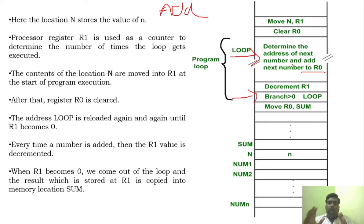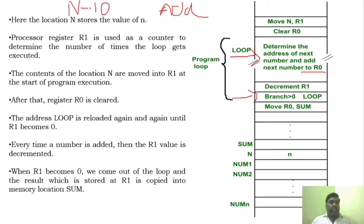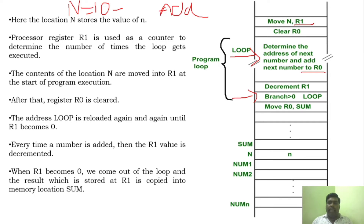How is this executed? For example, if there are 10 numbers, N would have a value of 10. That particular value will be initially stored in R1 — R1 would have the value 10. And now I am clearing the R0; R0 is 0.